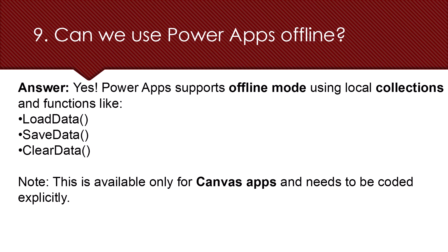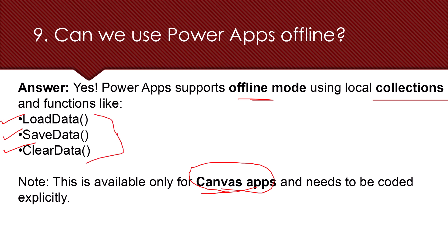Canvas Apps support offline mode using local collections and functions like LoadData, SaveData, and ClearData. This offline mode is only available in Canvas Apps and needs to be coded explicitly using these methods.